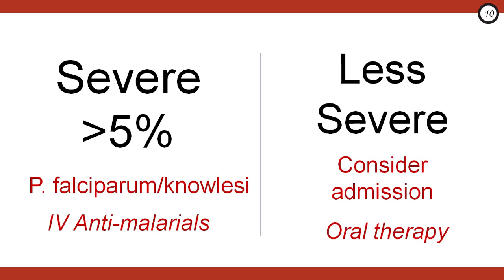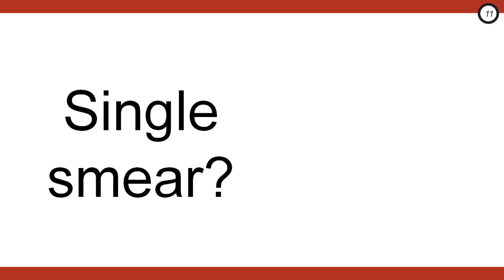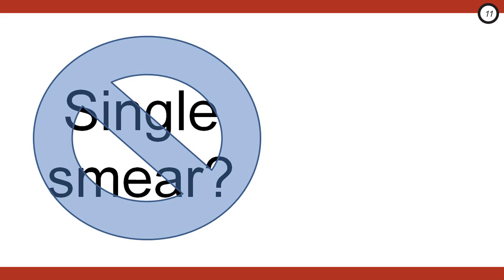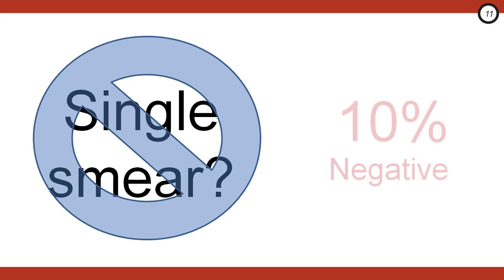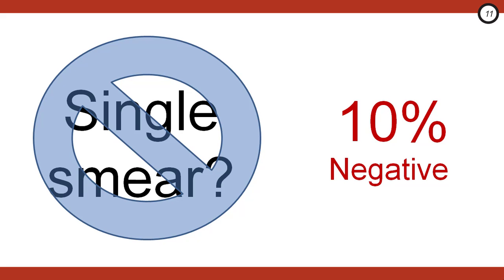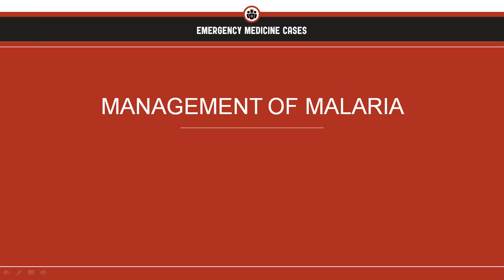Recognized parasite levels may change over time, so patients with low or no parasite levels may still need empiric oral therapy and admission. Never rely on a single smear to rule out malaria. Because of fluctuating levels, the first smear is negative in about 10% of patients. Now that we know how to recognize and diagnose malaria, let's get to the management.